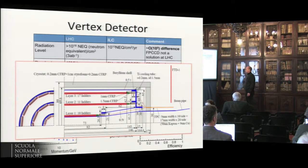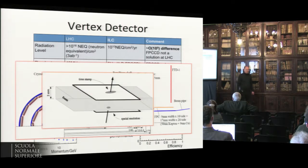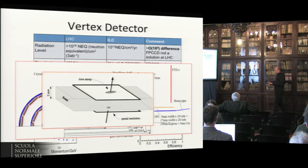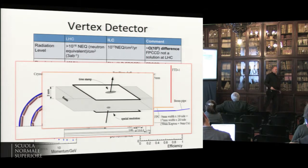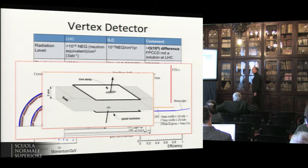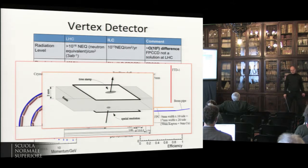The current vertex detector design calls for a three-layer layout where each layer is actually a double layer — two layers separated by a few millimeters. This is powerful in two ways: it allows optimizing one layer for spatial accuracy and the other for timing accuracy, and it provides a local measurement of the track direction — so-called mini-vectors — which significantly helps in reconstructing low-momentum particles.